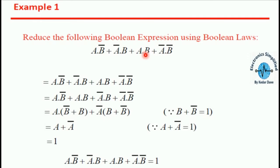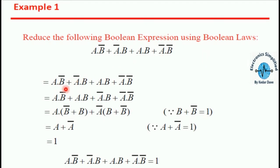For the first example, we need to prove that a·b̄ + ā·b + a·b + ā·b̄ equals 1. You can see the equation written here and then the simplification is done. In this particular equation, we can see that a·b̄ and the other terms are rearranged.